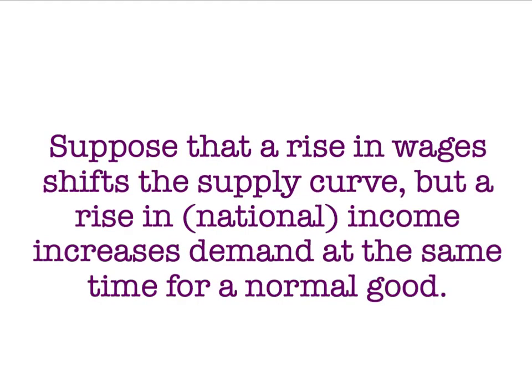Here's our first example. Let's suppose that we've got a situation where wages have gone up, and that's going to shift the supply curve. Labour is an input, so a rise in wages means a rise in an input price. That will shift the supply curve to the left. But let's suppose that at the same time there's a rise in national income, and that we're talking about a normal good, so that the demand curve is going to shift to the right at the same time as the supply curve shifts to the left. What happens?